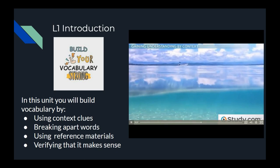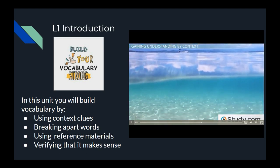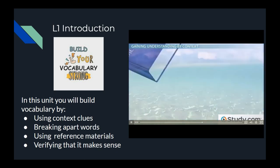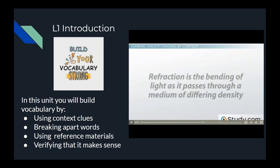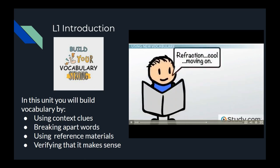Reflection is light bouncing off a surface, so maybe refraction is light going through a surface. Let's look at the dictionary to see our conclusion. Refraction is the bending of light as it passes through a medium of differing density. We were pretty close. Understanding a word, moving on, and never seeing it again is a great way to forget it.